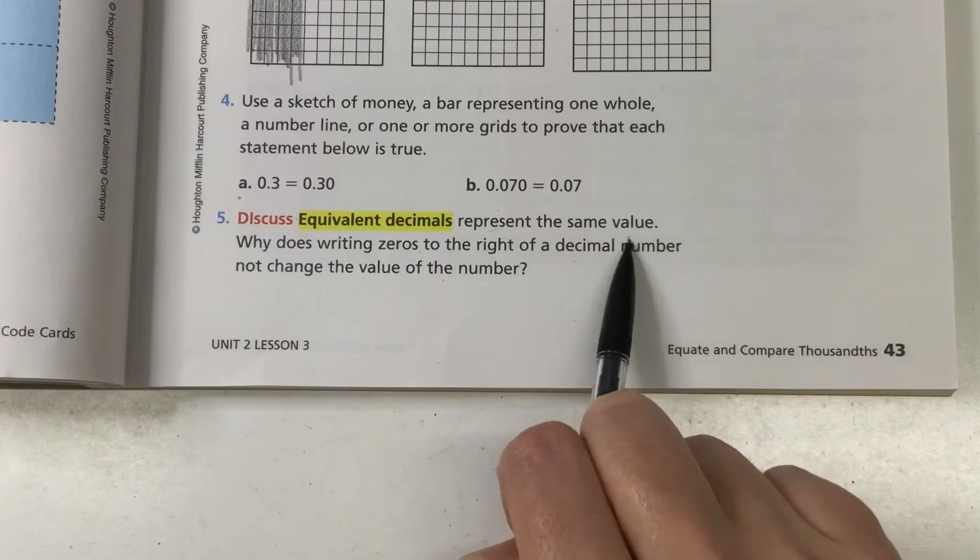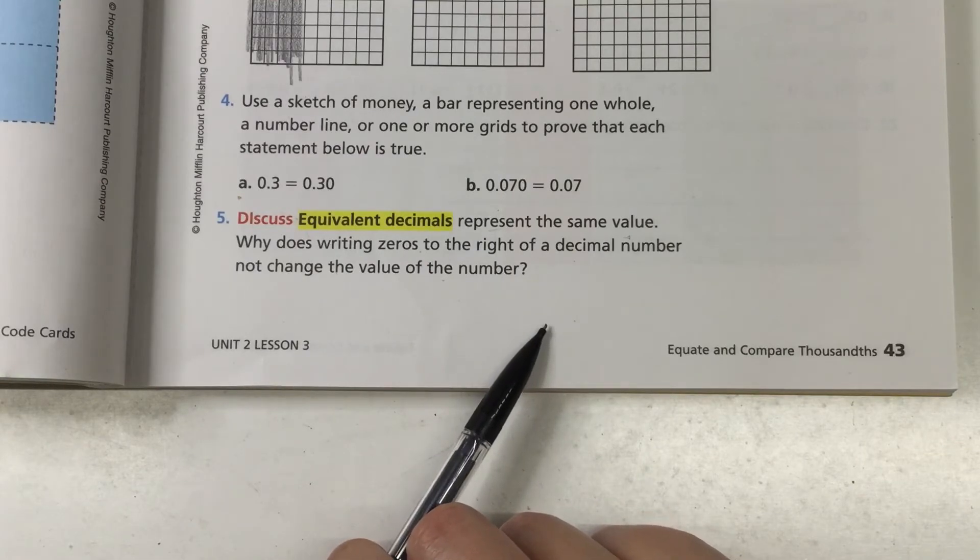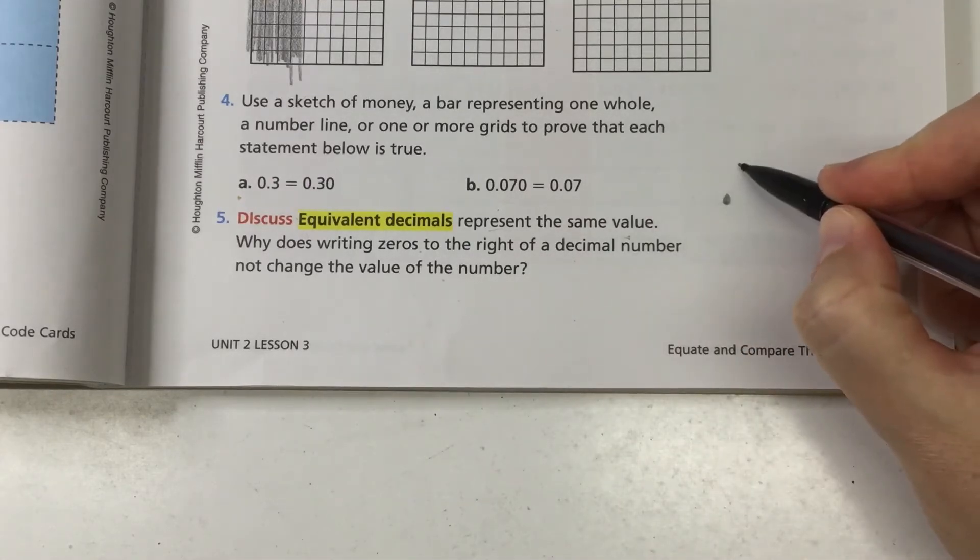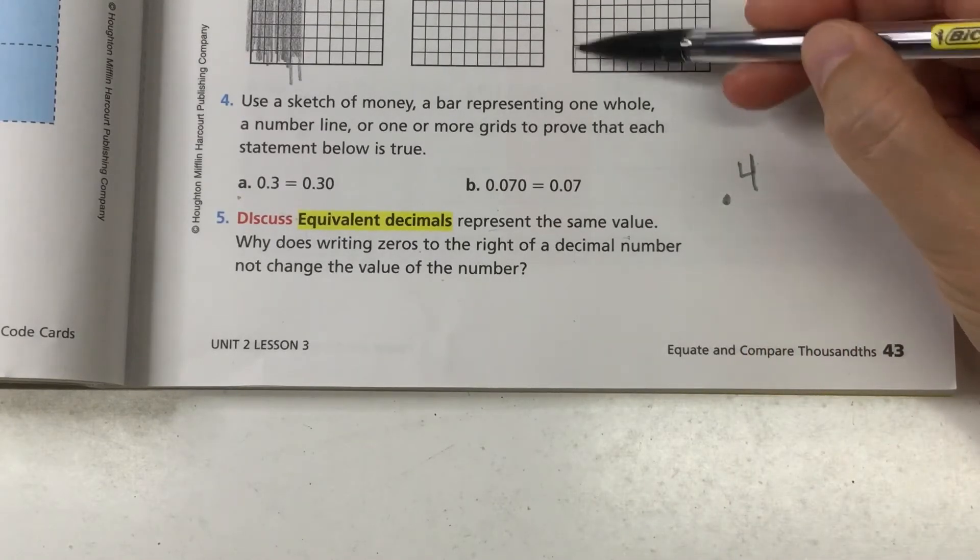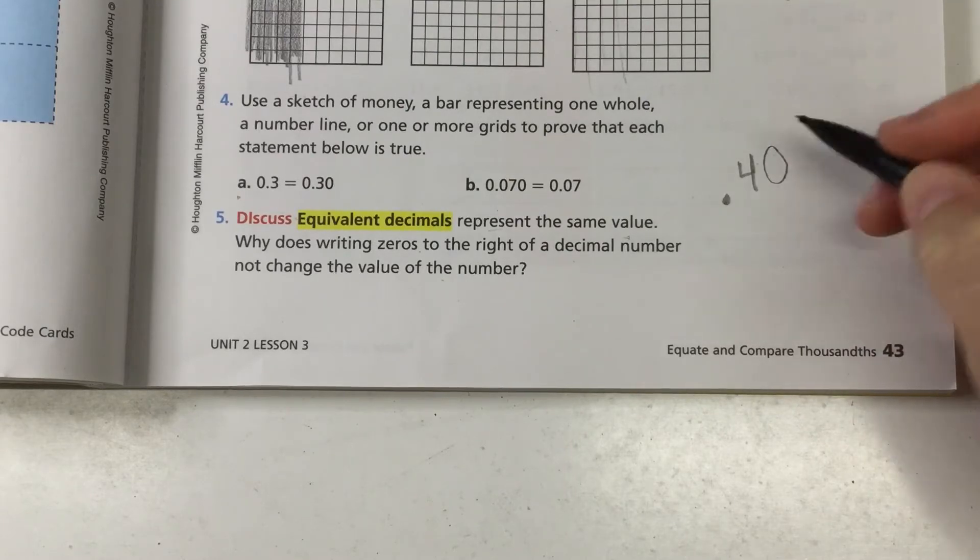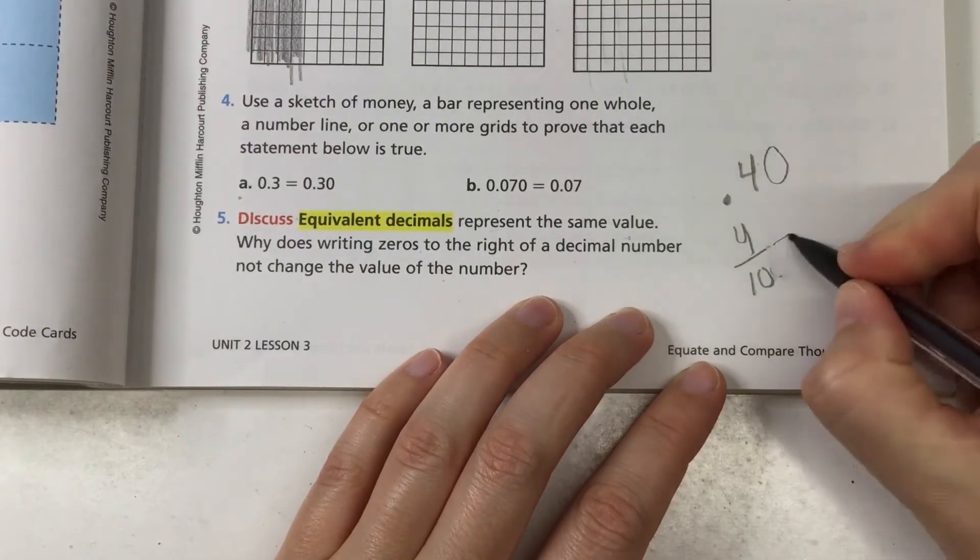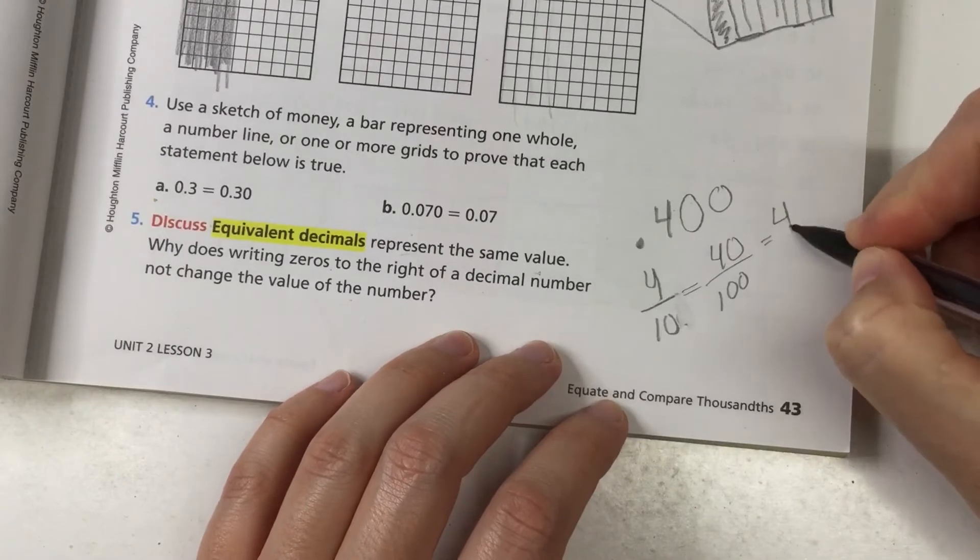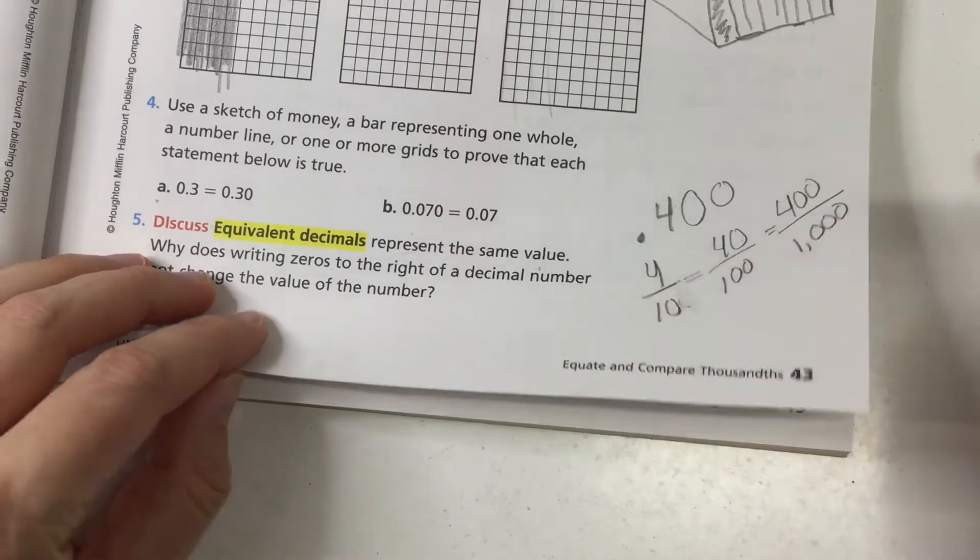Equivalent decimals represent the same value. Why does writing zeros to the right of a decimal number not change the value? It's just like writing zeros in front of a number to the left of the decimal point. So it doesn't change the value, it just makes the pieces tinier. Four tenths would be one of these, right? Four tenths. So four of those. But if I add a zero here, now it's just forty hundredths. So it's equivalent four tenths. Four tenths is equivalent to forty hundredths, which is equivalent to four hundred thousandths. So your pieces are just getting smaller, but your value is staying the same.